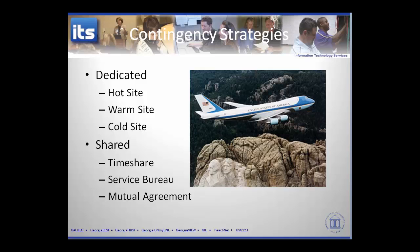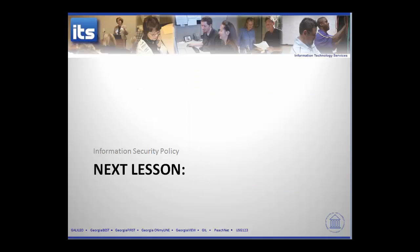Is it worth standing up one of these six options associated with business continuity? You should do that analysis and address it at least on paper so that you have something in place before moving forward. If you're going to execute one of these contingency strategies, all but the mutual agreement option is probably going to cost you some money, so you'll need to get it worked into your budget. We've come to the end of this chapter on continuity planning. Next we'll move into policy and look at the three different types of policy statements and how they interact with information security and privacy.